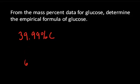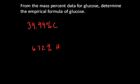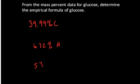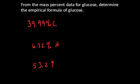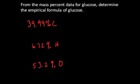6.72% hydrogen, and 53.2% oxygen. From this mass percent data, determine the empirical formula for glucose.